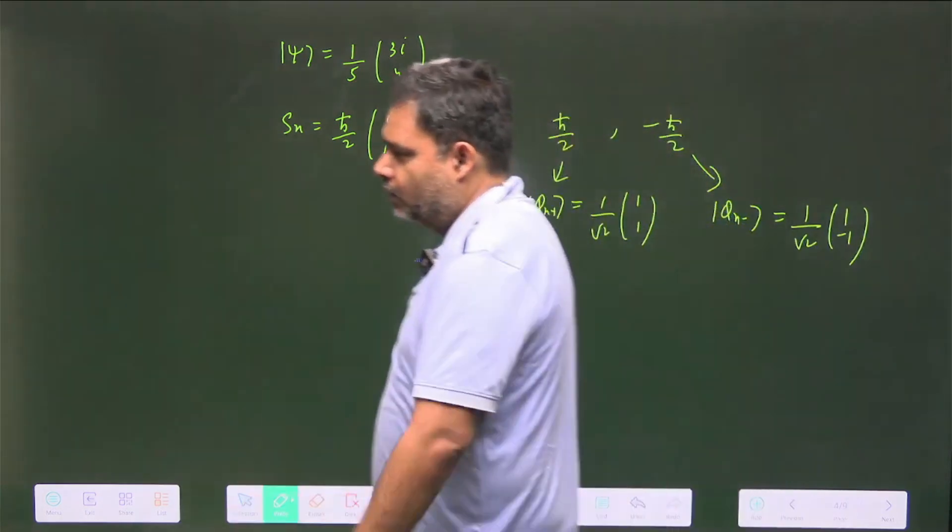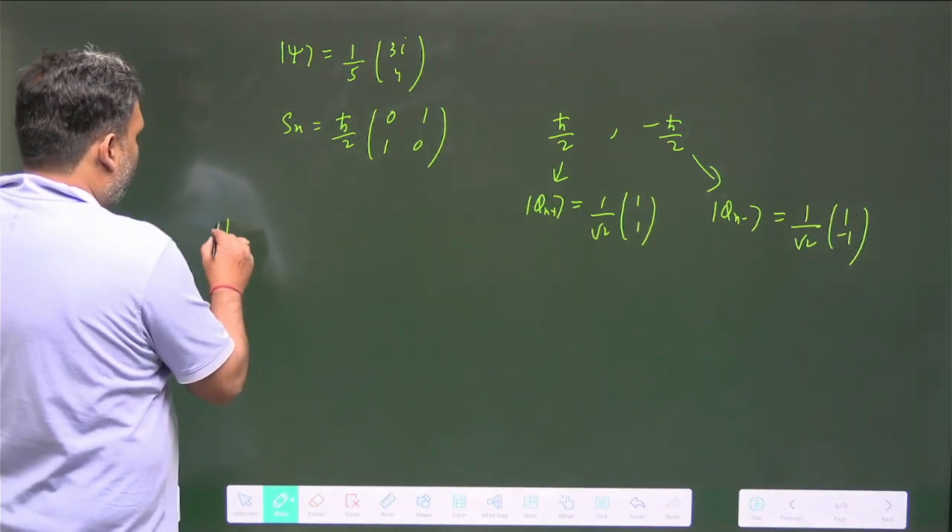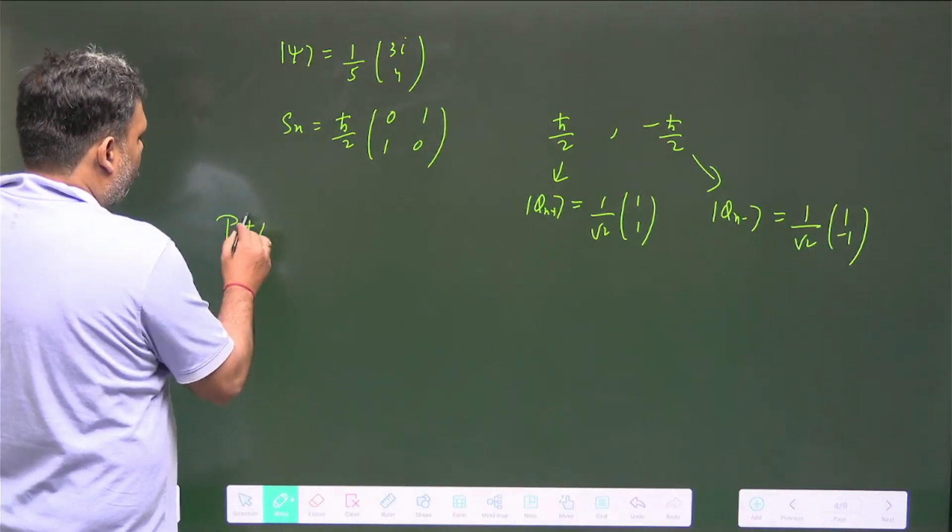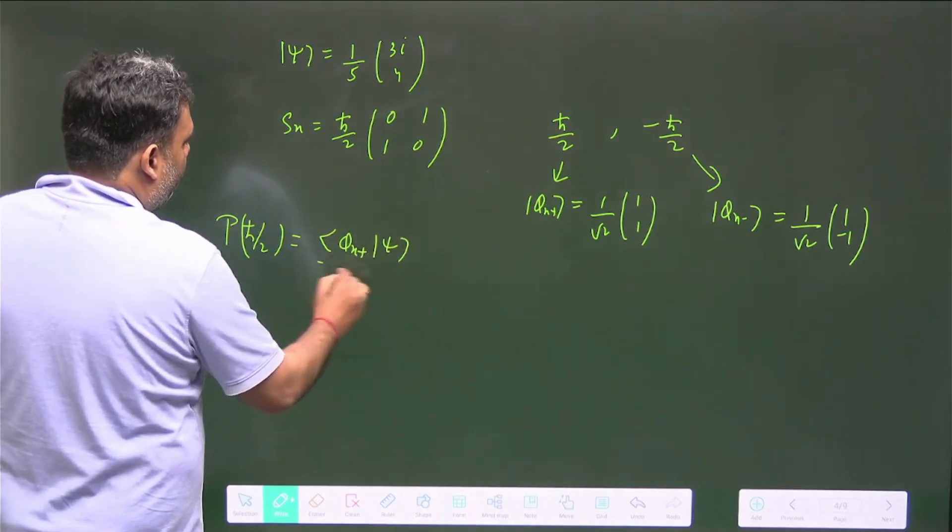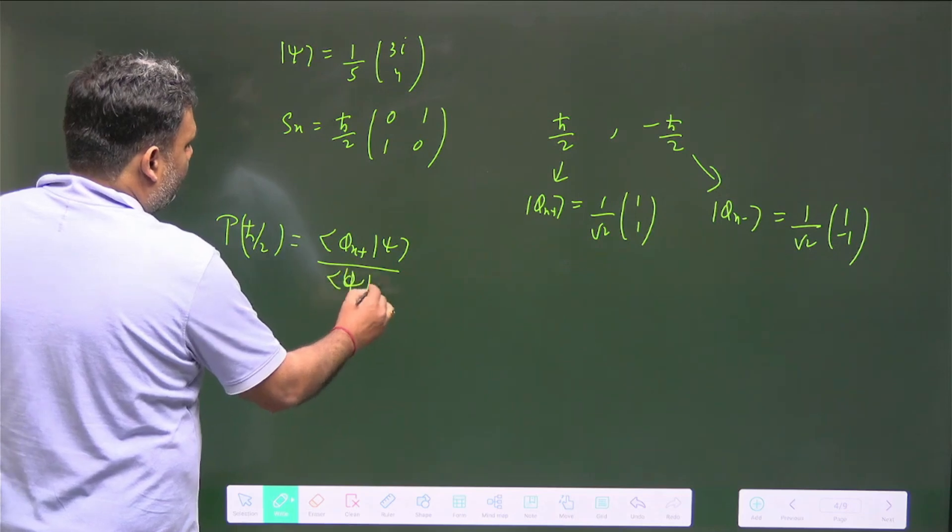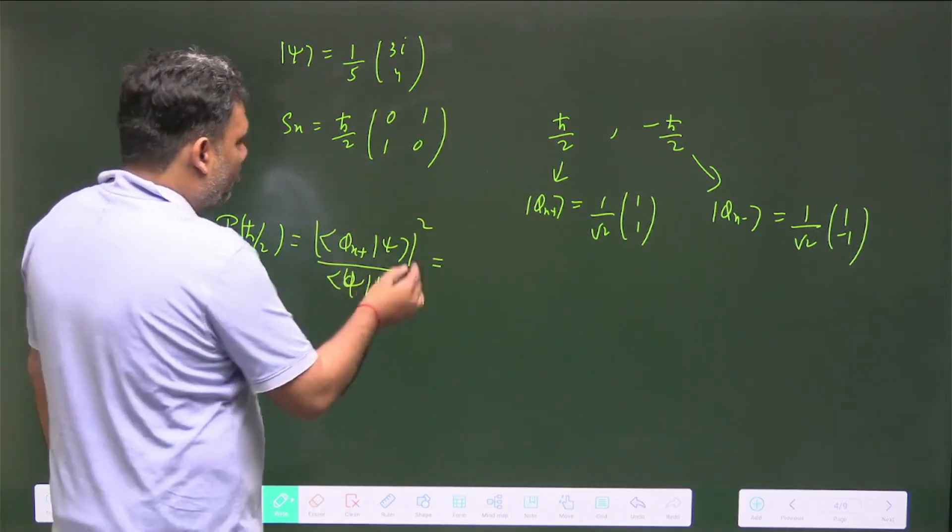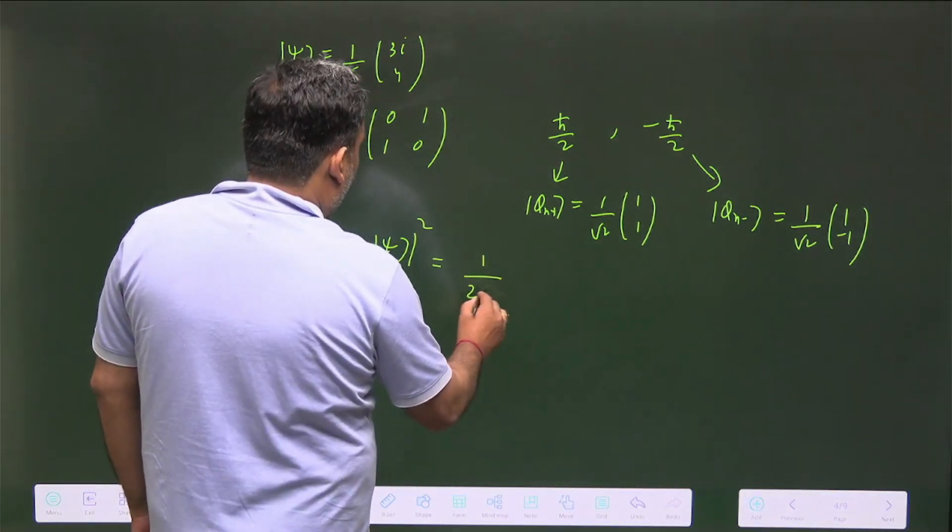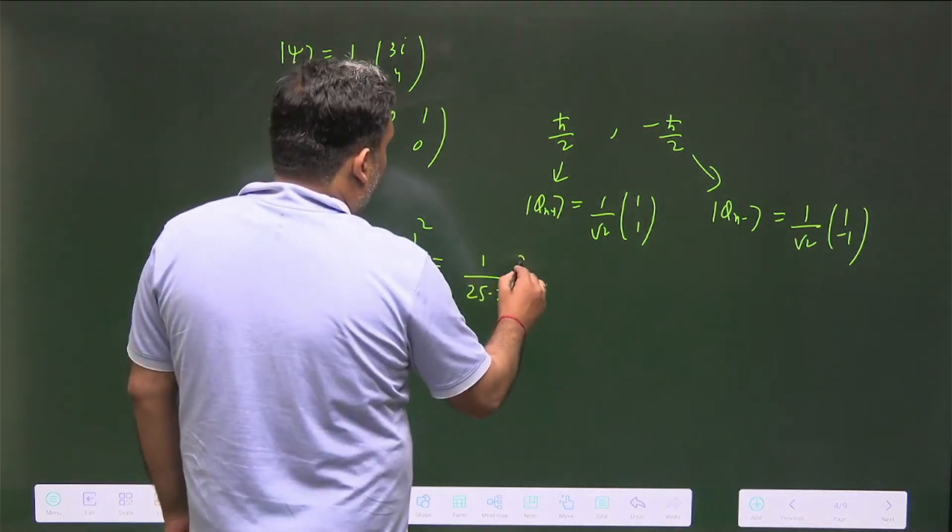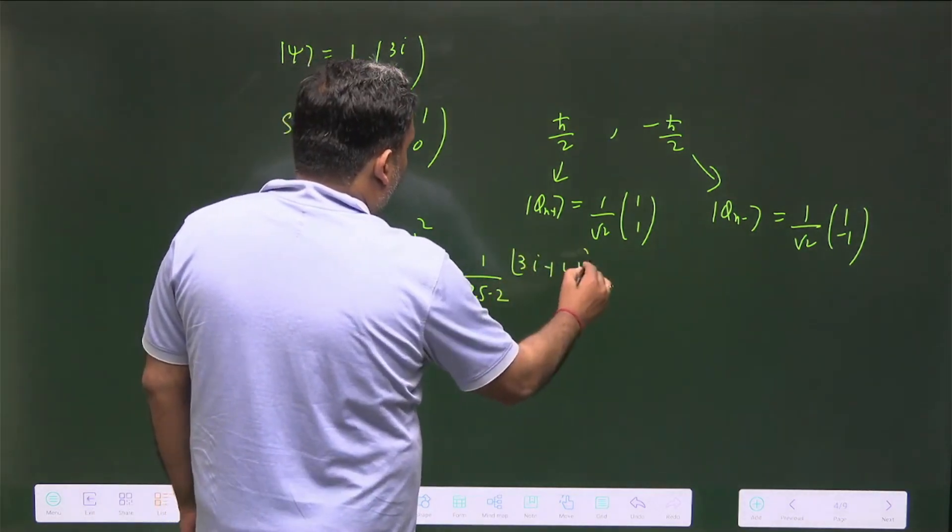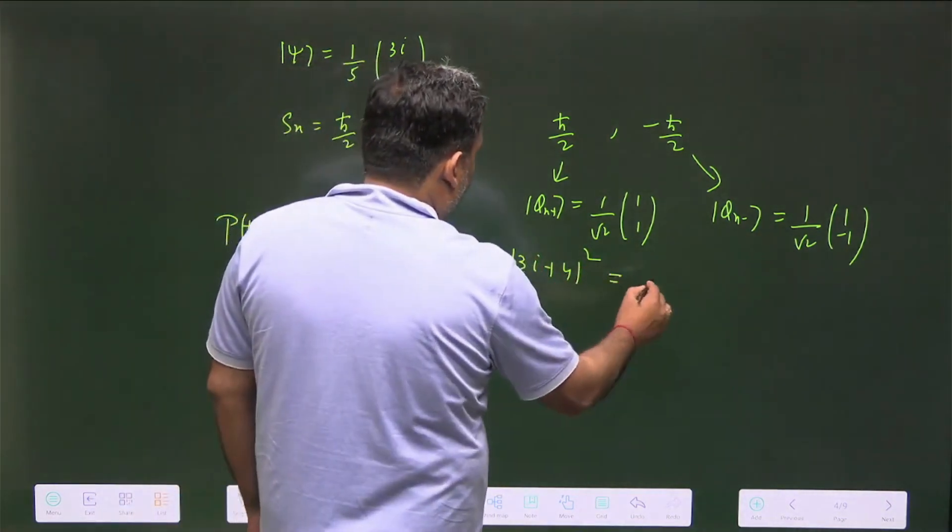Now you can go for the postulates 2 and 3. The probability of getting ℏ/2 is basically |⟨φx+|ψ⟩/⟨ψ|ψ⟩|², and you will calculate this as 1/(25×2) times |3i+4|². Once you find this mod square, that value is 25/(25×2), which is 1/2.